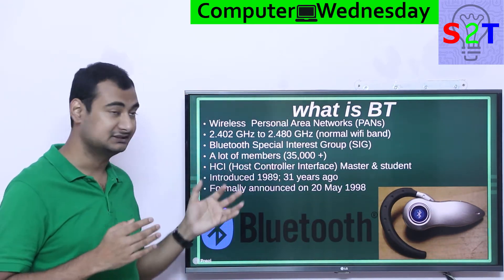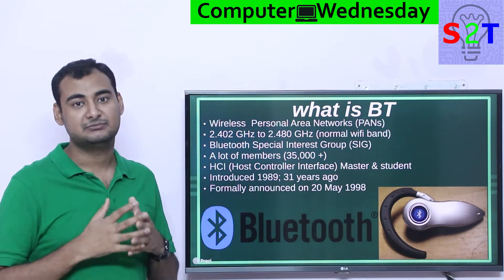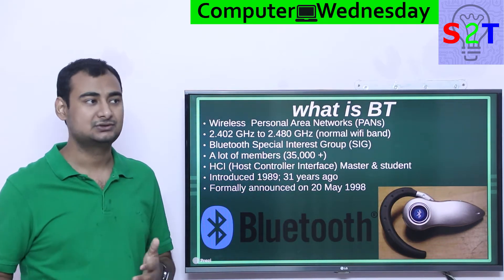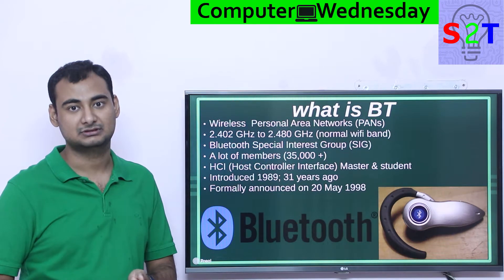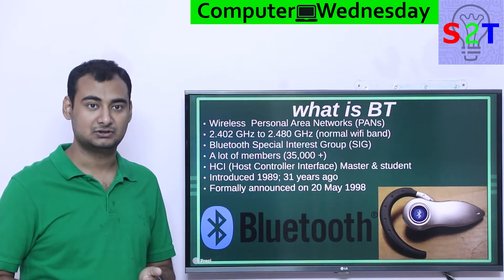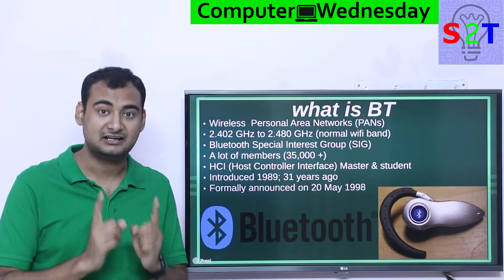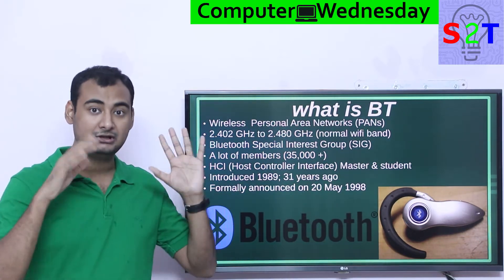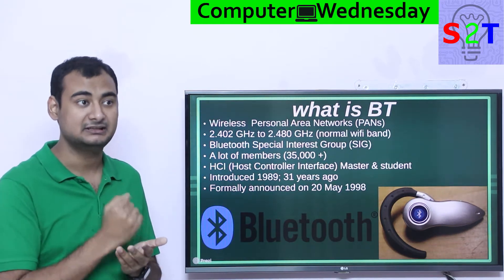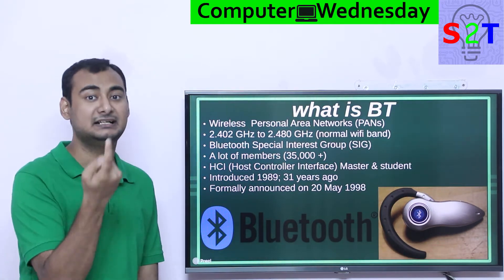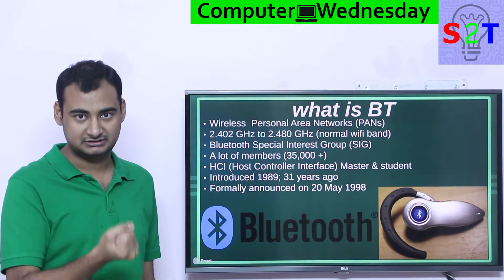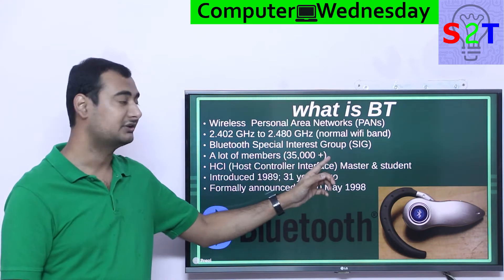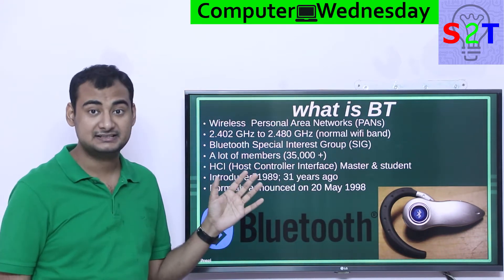Bluetooth is a standard, and a standard requires a governing body to maintain it. For example, SD cards — you can buy a Samsung SD card and put it in a Sony or Canon camera because there is an SD Association that regulates it. Similarly, USB has a USB association. For Bluetooth, there is the Bluetooth Special Interest Group, or SIG.